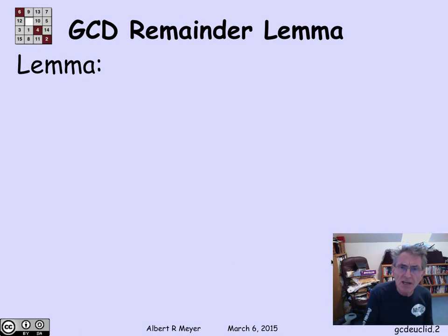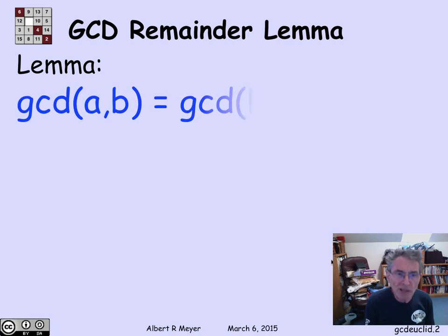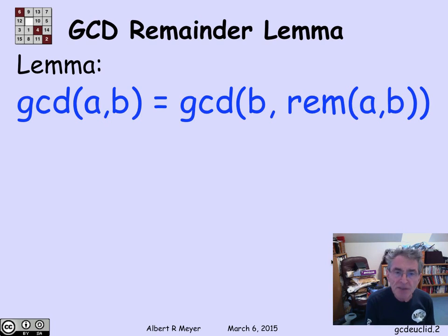So the Euclidean algorithm is based on the following lemma, which we'll call the remainder lemma. And it says that if a and b are two integers, then the greatest common divisor of a and b is the same as the greatest common divisor of b and the remainder of a divided by b, providing, of course, b is not 0.